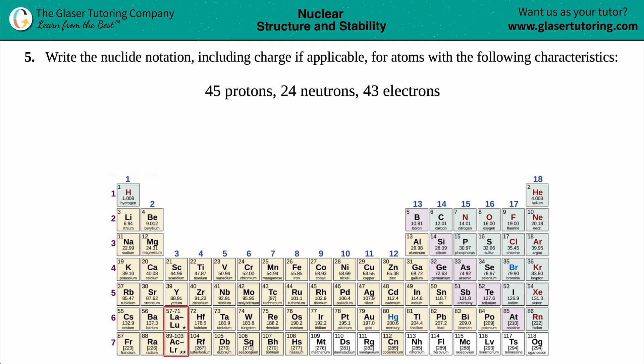Number five, write the nuclide notation, including charge if applicable, for atoms with the following characteristics. And then we have our example right here. So we have to write nuclide notation for something that has 45 protons, 24 neutrons and 43 electrons.